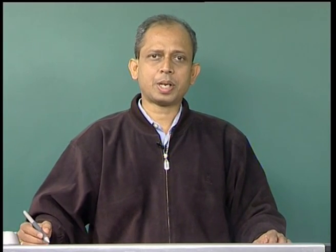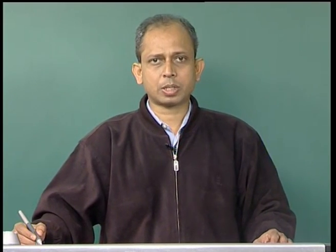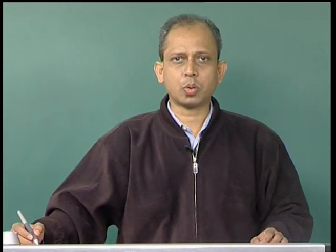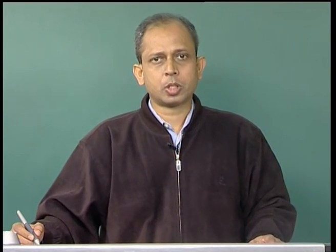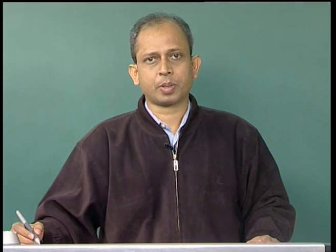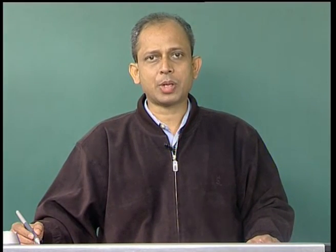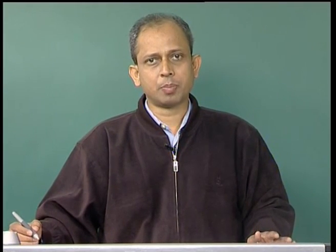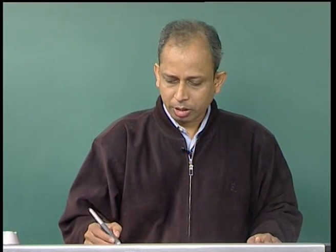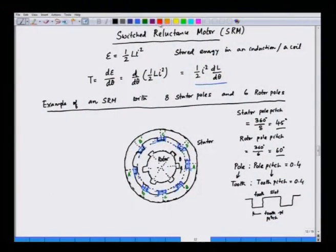Hello and welcome to this lecture on advanced electric drives. In the last lecture we were discussing about the switched reluctance motor drive and how to control this motor. We have seen that in a switched reluctance motor the torque is produced by the variation of inductance: T = (1/2) i² (dL/dθ). This is the principle of torque production.